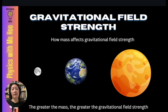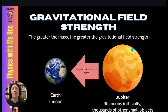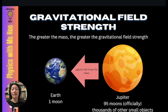Evidence of how mass affects gravitational field strength can be seen by comparing the moons of Earth against the moons of Jupiter. The mass of Jupiter is approximately 318 times the mass of Earth. Earth only has one moon, held in orbit by Earth's gravitational field strength. Because Jupiter has 318 times greater mass, it has a much higher gravitational field strength — and Jupiter officially has 95 moons and thousands of other small objects in its orbit, far more than Earth.